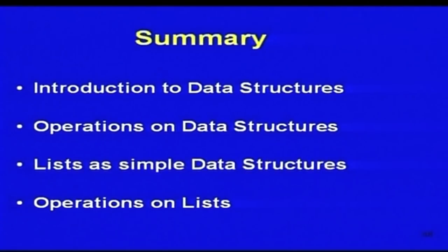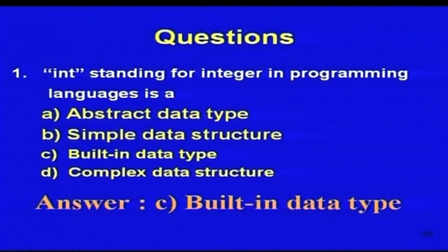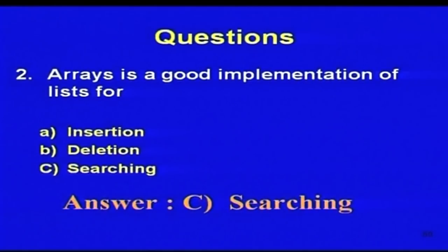In this lecture, we have seen the importance of data structures, some operations on data structures, and we have taken a simple data structure — the list — and seen certain typical operations you can do on it. Let us answer some simple questions. Assuming INT stands for integer in programming languages, what is it — abstract data type, simple data type, built-in data type, or complex data structure? It is actually a built-in data type provided by the programming language itself. Arrays are a good implementation of lists for which operation: insertion, deletion, or searching? It is a good choice for searching.